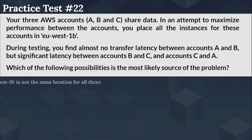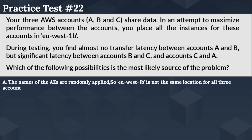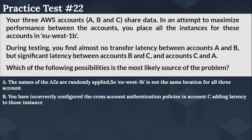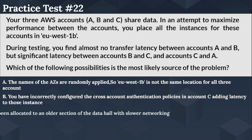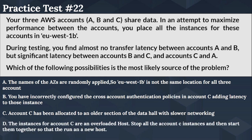Option A: the names of the AZs are randomly applied, so EU-West-1B is not the same location for all three accounts. Option B: you have incorrectly configured the cross-account authentication policies in account C, adding latency to those instances. Option C: the instances for account C have been allocated to an older section of the data hall with slower networking. Option D: the instances for account C are on an overloaded host.